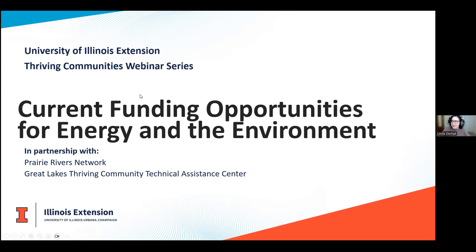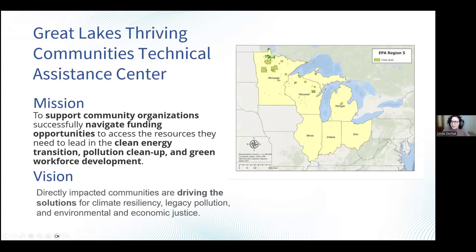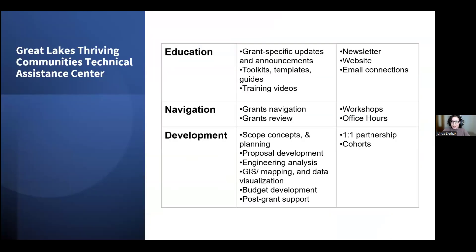Before we get started, I want to give an introduction to the Great Lakes Thriving Community Technical Assistance Center, which we refer to as the Great Lakes TICTAC. This center is designed to get state and federal funds in the hands of local communities to plan for and implement environmental infrastructure and energy transition projects. It is headquartered at the University of Minnesota and includes several other states. Illinois Extension and Prairie Rivers have partnered to support Illinois communities. We are here to help identify funding opportunities and do research to learn about what other communities have done.